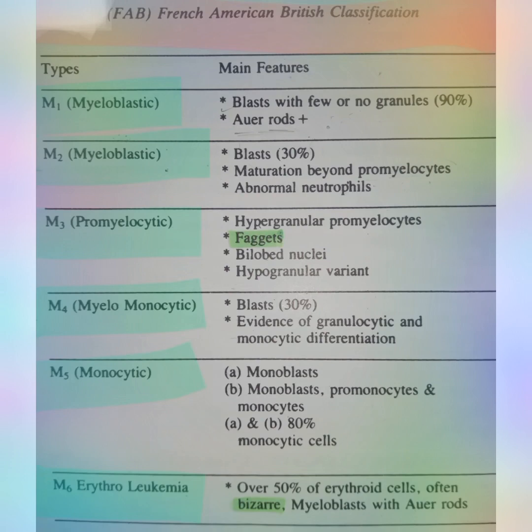Back to FAB Type 1 - blast cells with few or no granules. You can see that 90% of the leukocytes are blast cells, meaning they are at the first stage of maturation which is the myeloblast stage. Only a few cells will be at the mature cell stage, and this is also a diseased leukocyte condition.